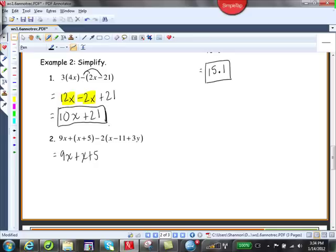Now I'm going to go ahead and distribute this minus 2 throughout. So we'll have minus 2 times x, minus 2 times negative 11, and then we'll have minus 2 times 3y. So this is our distributive law. So we've got, actually we can combine these two terms that have x's. 9x plus 1x is 10x plus 5.